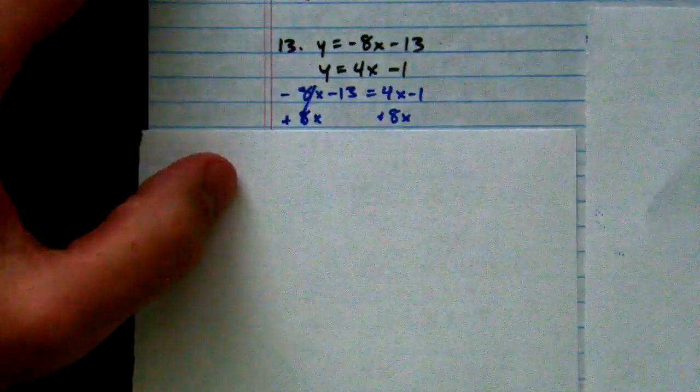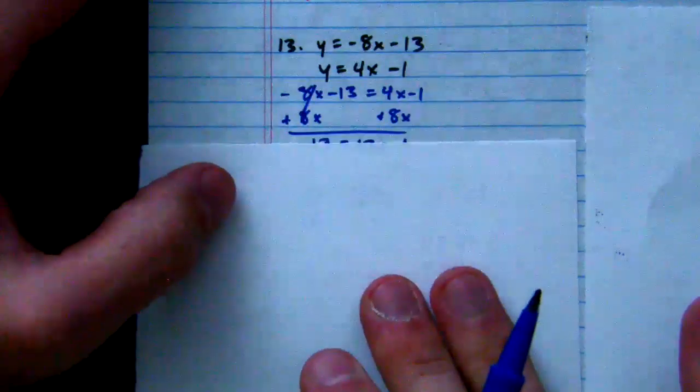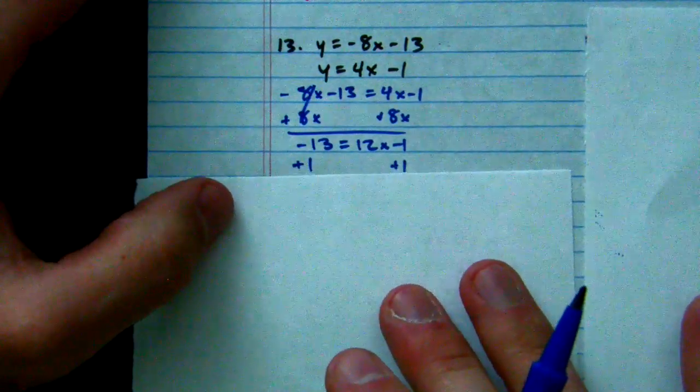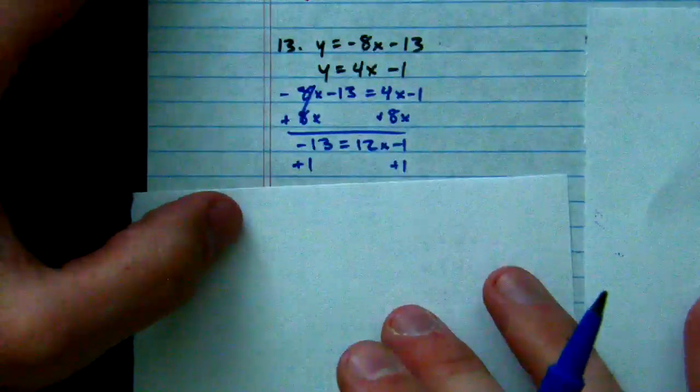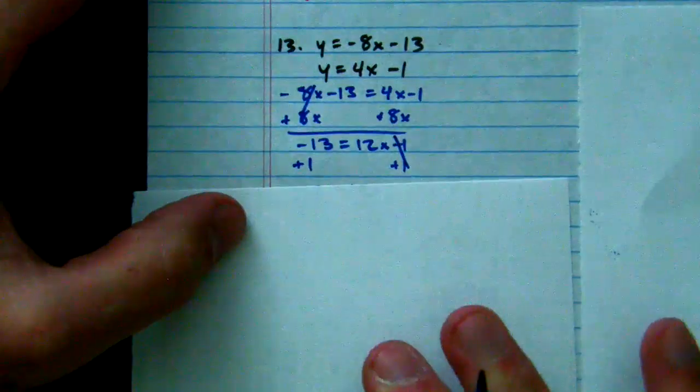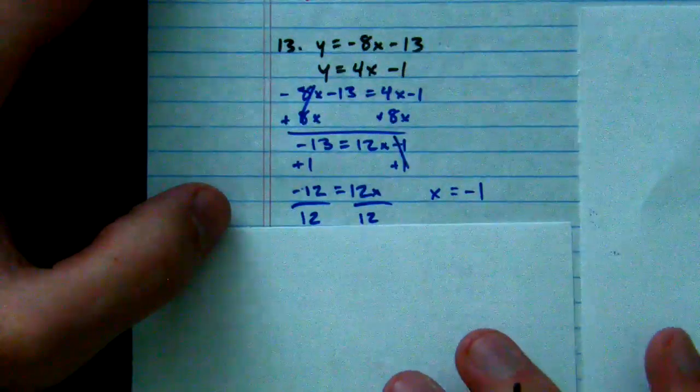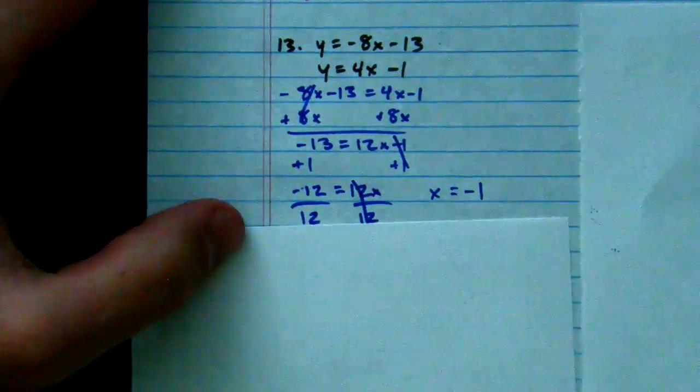I went ahead and added 8x to both sides, which left me with negative 13 equals 12x minus 1. Now we add 1 to get the variable by itself, and that cancels right there. And we're left with 12x equals negative 12, and we divide by 12, and we get negative 1.